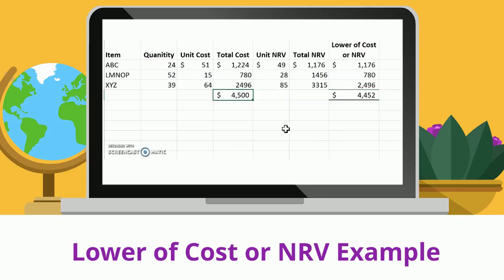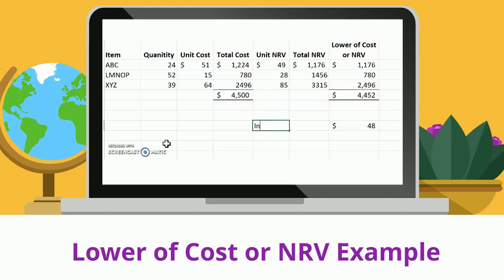So we total up the lower of cost or net realizable value column. My cost right now is a total of $4,500, but my lower of cost or net realizable value total is $4,452. That is lower than what I currently have my inventory recorded at cost, so I need to write this down. The difference is $48. My inventory write-down would be $48. To write that down, we debit cost of goods sold for $48 and credit inventory for $48. Now inventory will be recorded and reported at $4,452. You've completed all the steps of inventory costing and valuation.